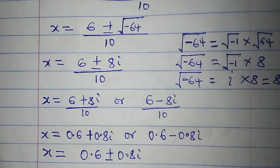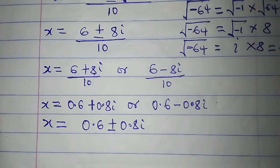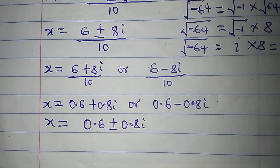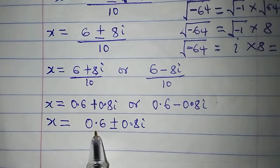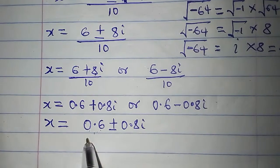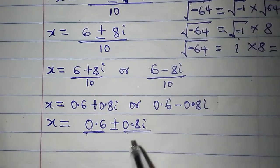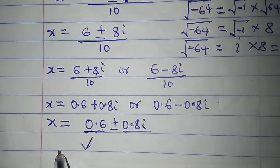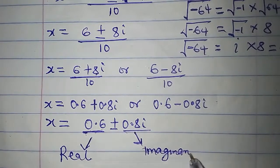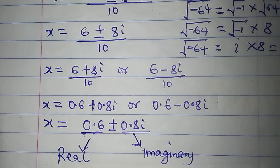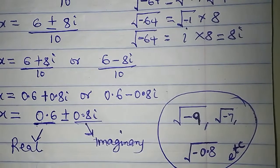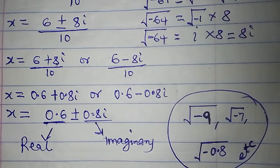This solution is a complex solution because the values of X here are complex values — they are complex numbers. We have 0.6 plus or minus 0.8i. The number has two parts: 0.6, and 0.8i. This part, 0.6, is called the real part, and this other part, 0.8i, is called the imaginary part. So a complex number is made up of a real number and an imaginary number. Whenever we attempt to take the square root of a negative number, we are definitely going to arrive at a complex value.